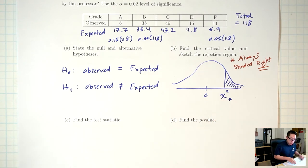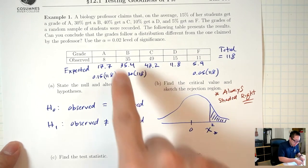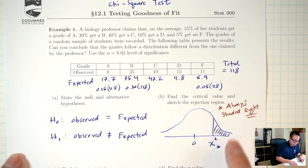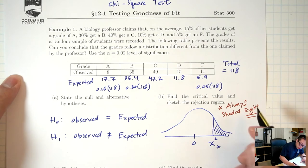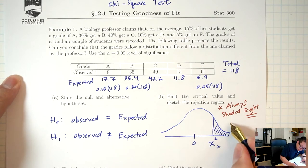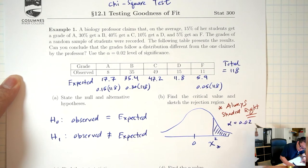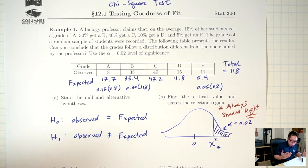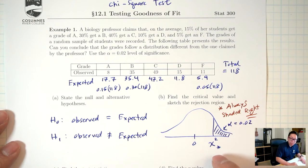Chi is the Greek letter chi, and square just means we're going to square it. So we're looking for a chi-square star, not a T-star or Z-star. Alpha = 0.02 is the shaded area to the right, and this is really just an area-to-chi-square problem.